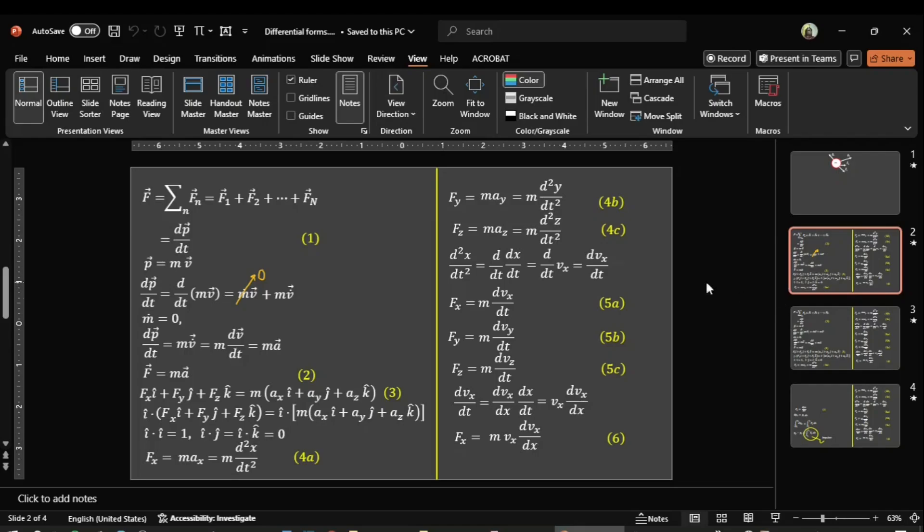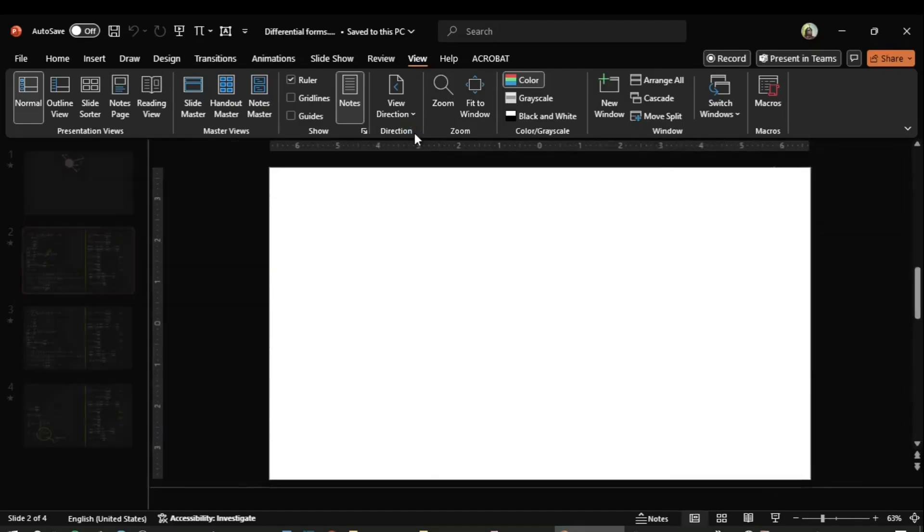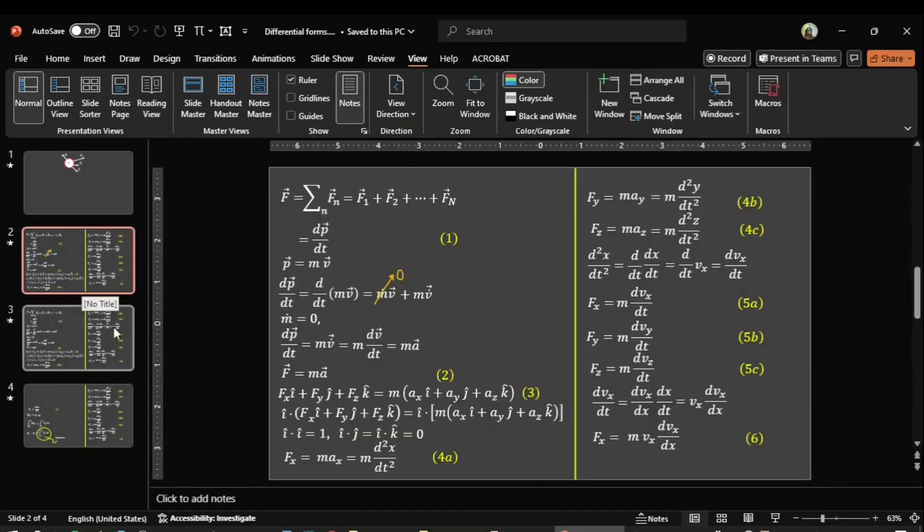If you don't like this to be on the right, you can again switch this back to the left by clicking over here. So this way you can switch the navigation pane from left to right and right to left on the PowerPoint screen. Thanks for watching.